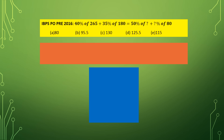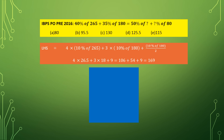This question was asked in IBPS PO Preliminary 2016. Let us solve the left-hand side. The left-hand side can be written as 4 multiplied by 10% of 265, plus 3 multiplied by 10% of 180, plus 5% of 180 — that is 10% of 180 divided by 2. This gives 4 multiplied by 26.5, plus 3 multiplied by 18, plus 9, which finally gives the result 169.